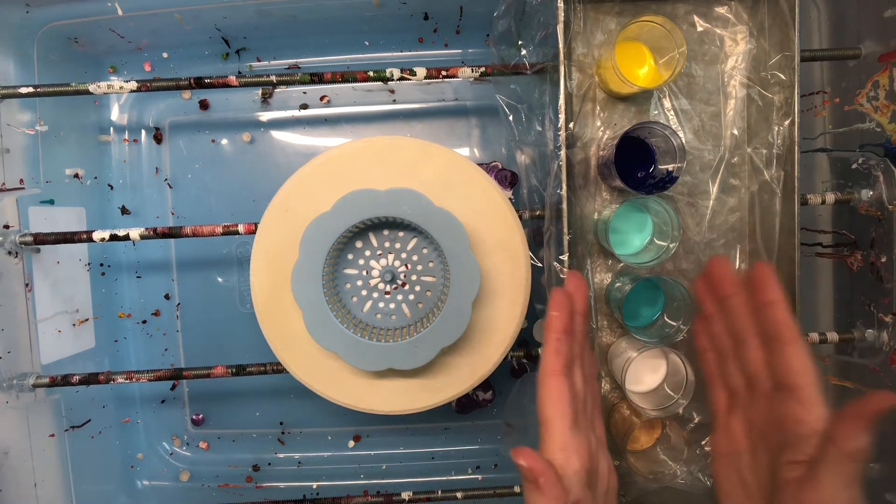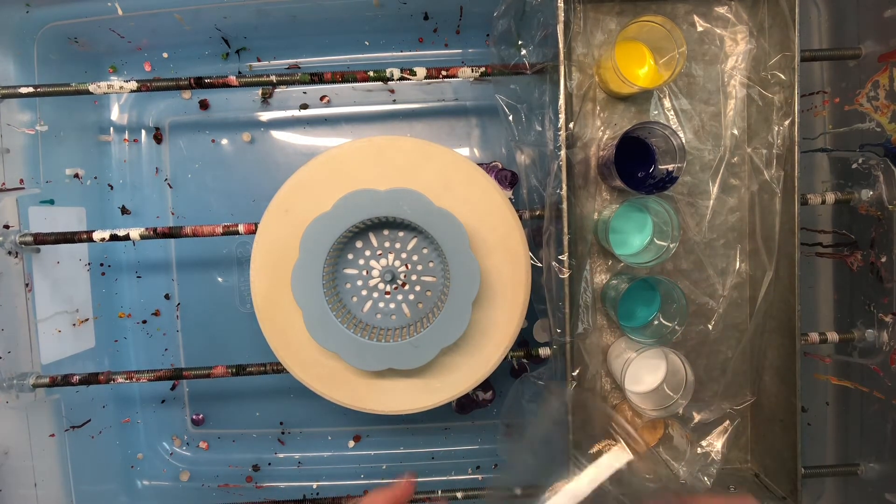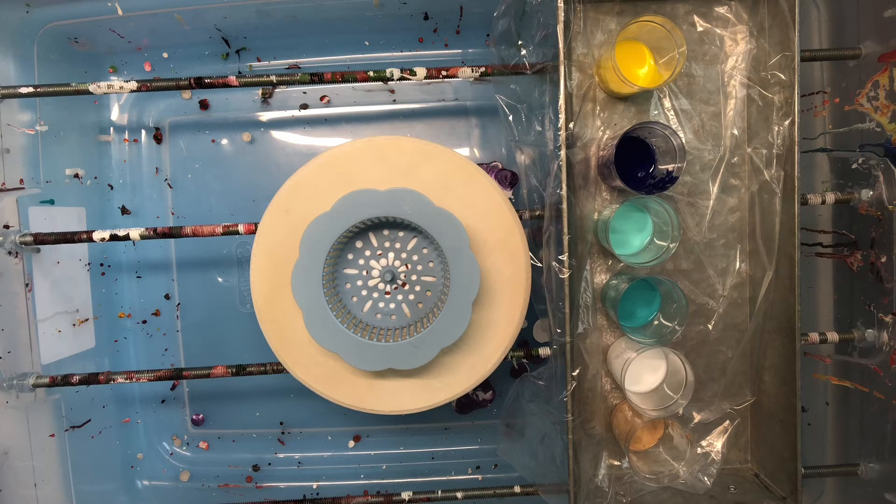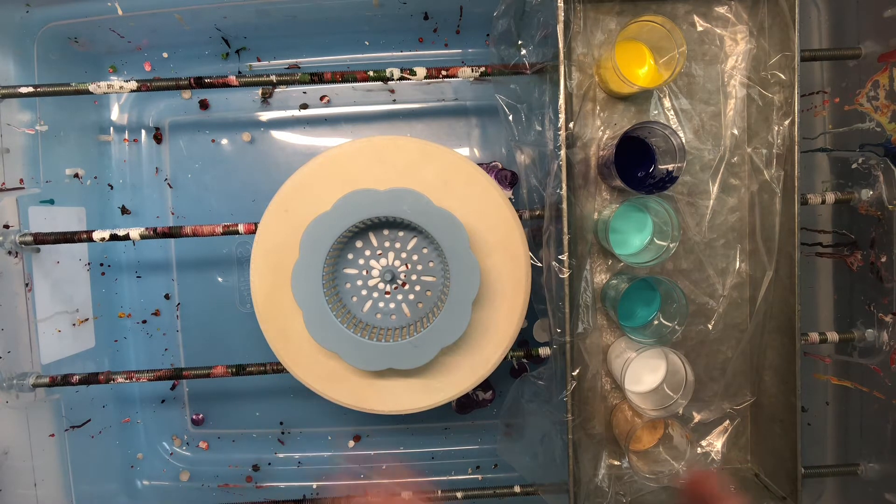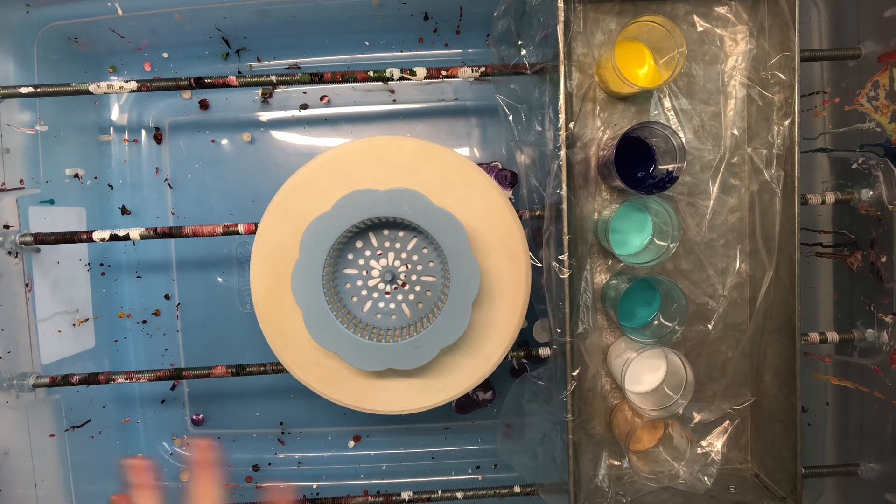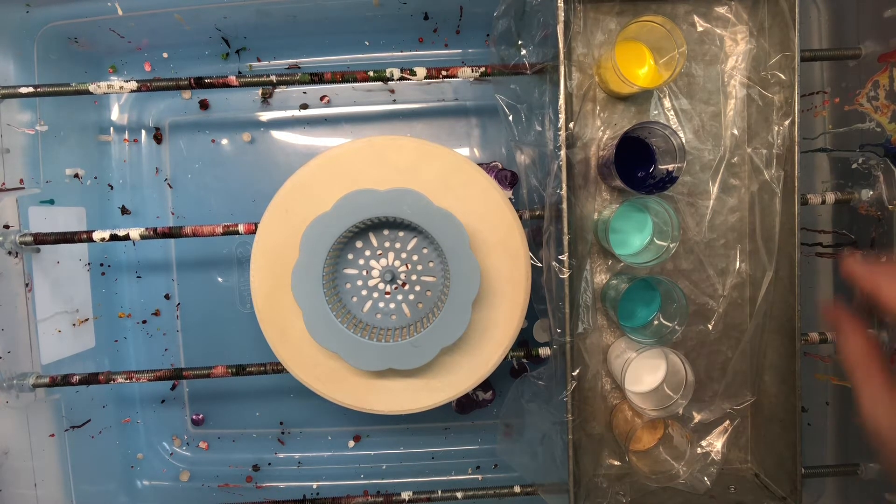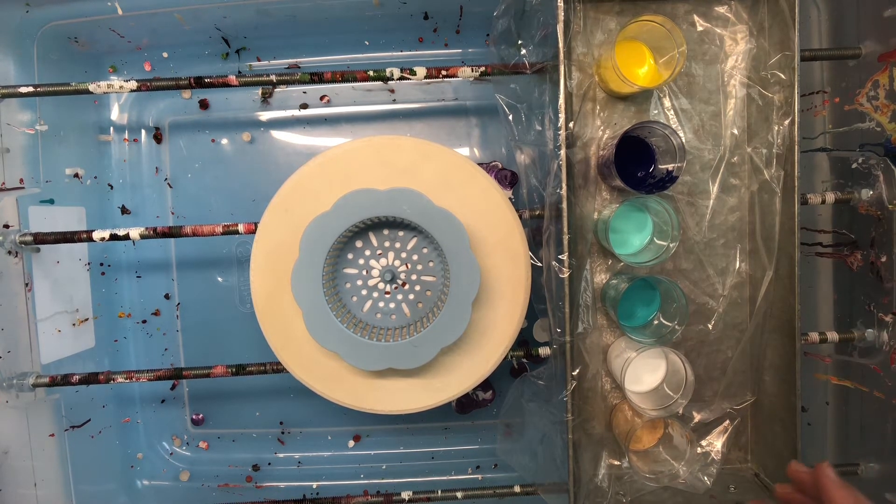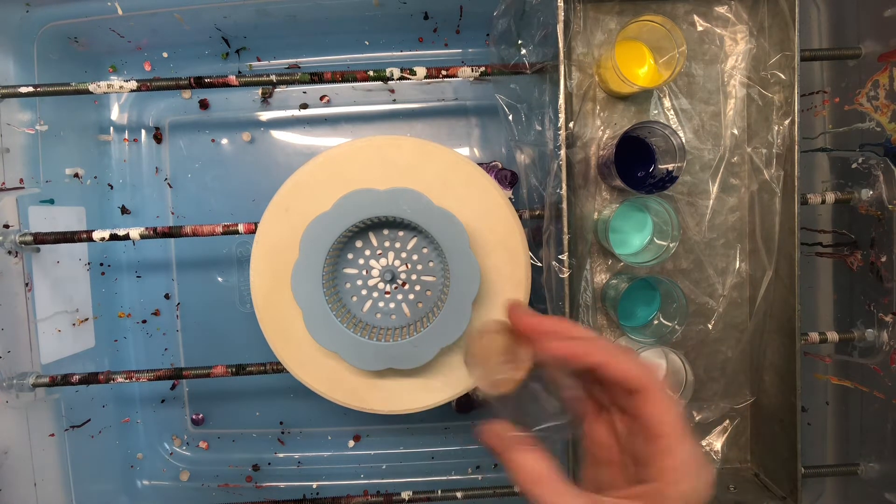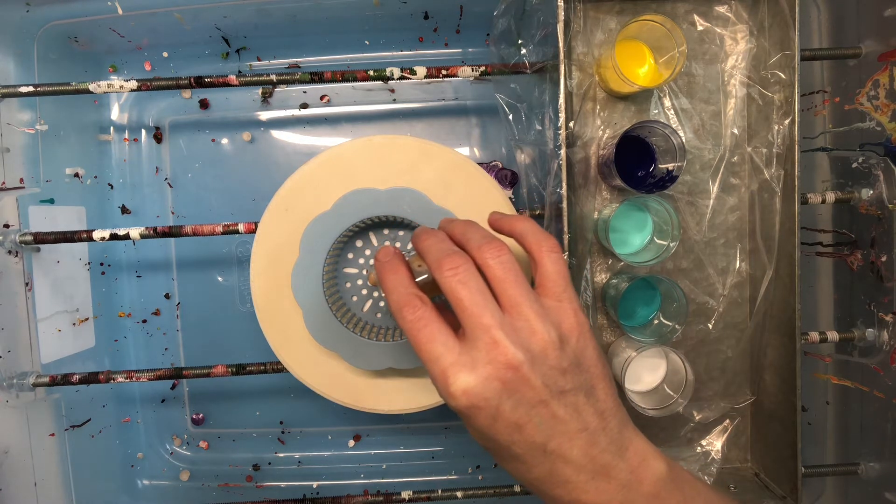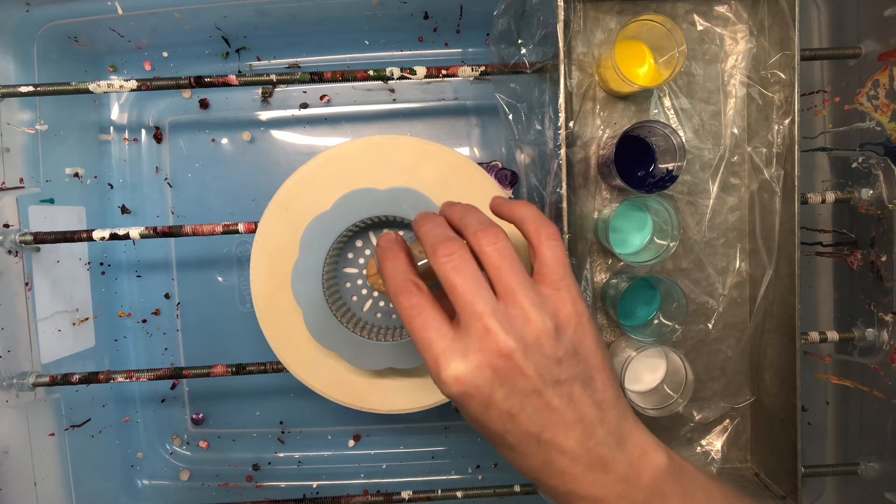Now we have a couple of options. We can either pour this paint into our handy dandy cup or we can pour in a little bit at a time. I actually believe I'm going to pour a little bit at a time this time because I don't want my colors muddled as much. I'd like to see some spread but keep it marbly. Let's see. Let's just see what happens. So I'm actually going to start with a little bit of gold. And I didn't put a lot of gold in here because we don't need a lot of gold.